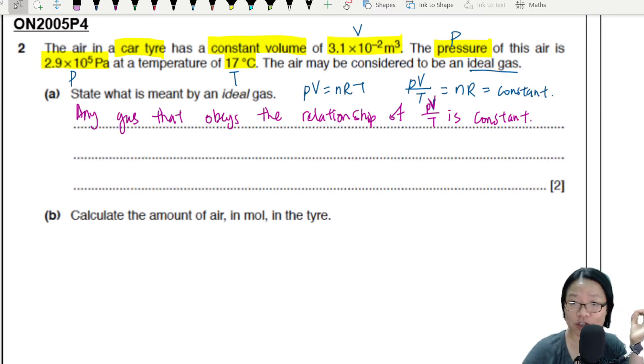Any gas that obeys the relationship PV over T is constant. But where is the second mark, you may ask?